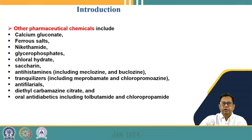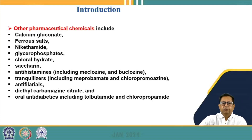Other pharmaceutical chemicals include calcium gluconate, ferrous salts, nicotinamide, glycerophosphates, chloral hydrate, saccharine, antihistamines including meclizine and prochlorperazine, tranquilizers such as meprobamate and chlorpromazine, anti-filarials such as diethylcarbamazine citrate, and oral antidiabetic drugs including tolbutamide and chloropropamide.